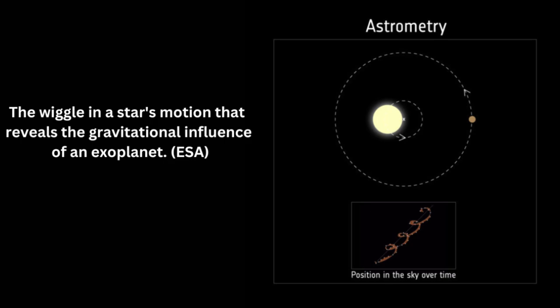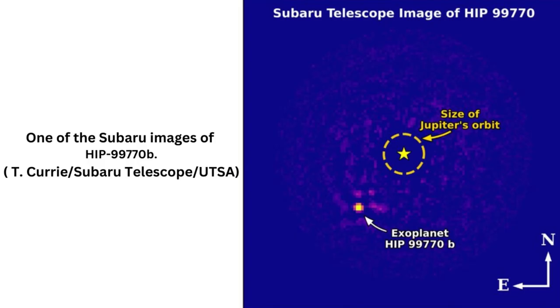Indirect planet detection methods are responsible for most exoplanet discoveries thus far. Using one of these methods, precision astrometry, told us where to look to try to image planets, Currie says. And, as we found out, we can now see planets a lot easier.